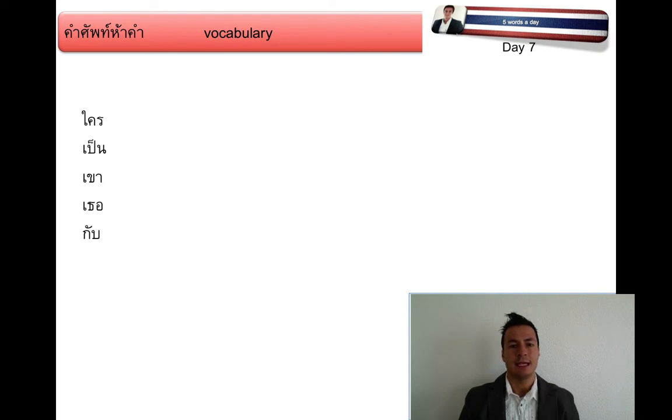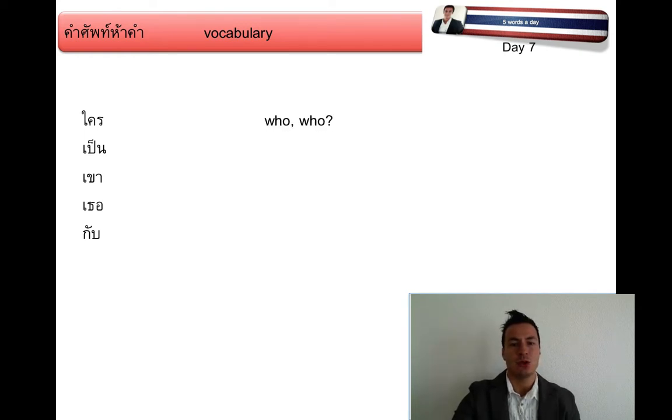ใคร เป็น เขา เธอ กับ — Translation: ใคร means 'who' or 'who' as a question.